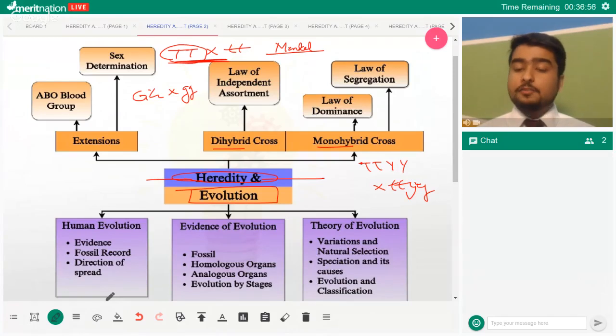For example, when you talk about TT - big T big T cross small t small t - you are following height. But that doesn't mean that big G big G cross small g small g won't be happening. Monohybrid cross simply means that you're following one character. A dihybrid cross means you are following two characters. So maybe you are doing big T big T big Y big Y cross small t small t small y small y.